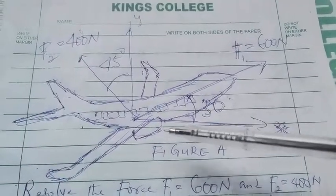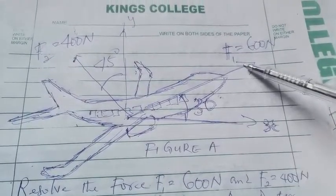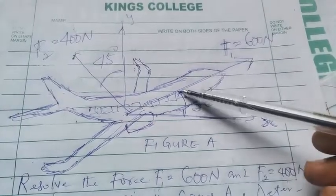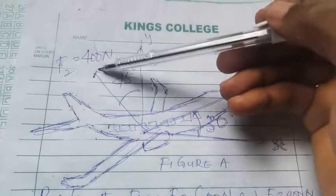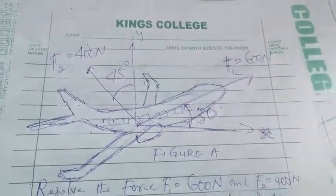This is what we have in the figure. We have this force F1 600 Newton at an angle of 30 degrees of the horizontal. We have this to be our vertical component and we have force F2 400 Newton at an angle of 45 to the vertical.